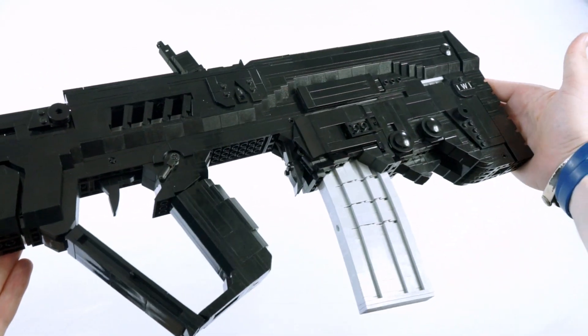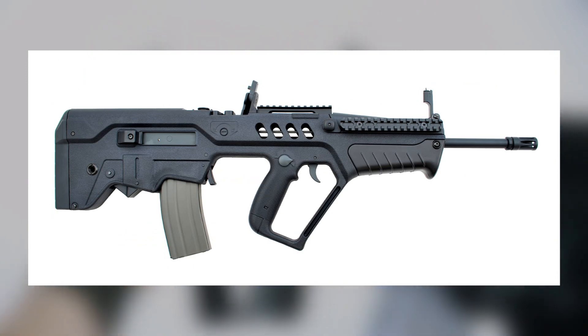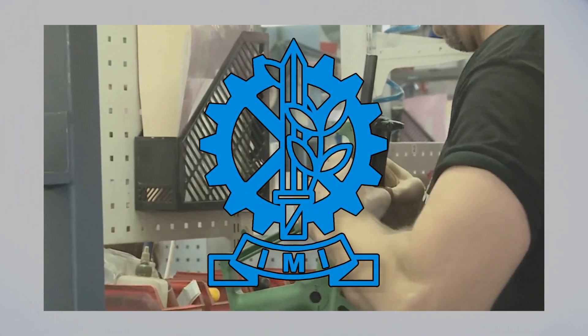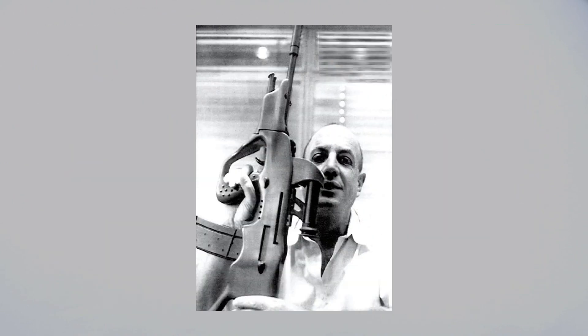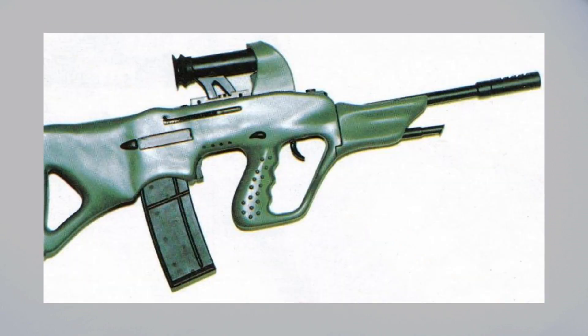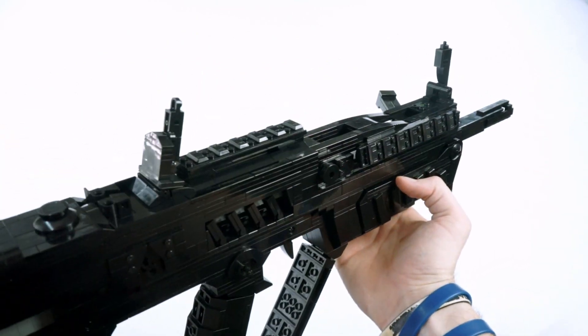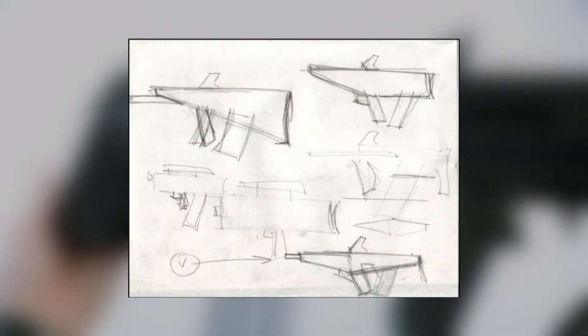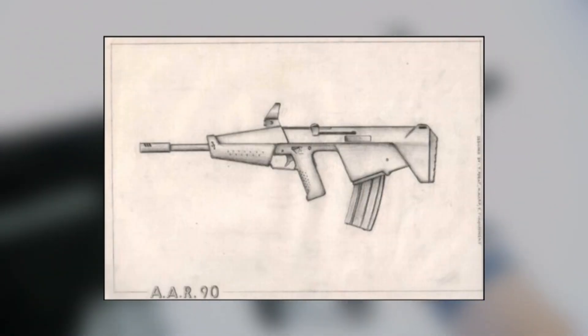The TAR-21, or the Tavor, is the bullpup assault rifle project created by a team over at IMI, or Israel Military Industries, in 1995, which was led by gun designer Zalman Shebs, who envisioned a design to be one of the most ergonomic rifles built for military purposes. The process for this weapon is really interesting, and even supposedly came from a simple napkin drawing one day, and was even almost called the AAR-90.